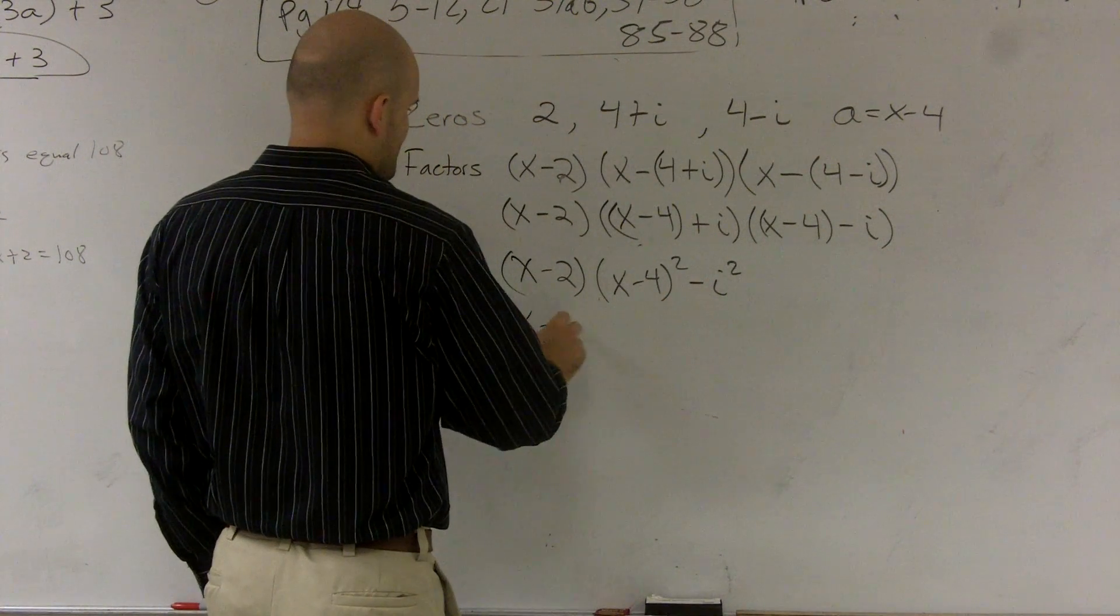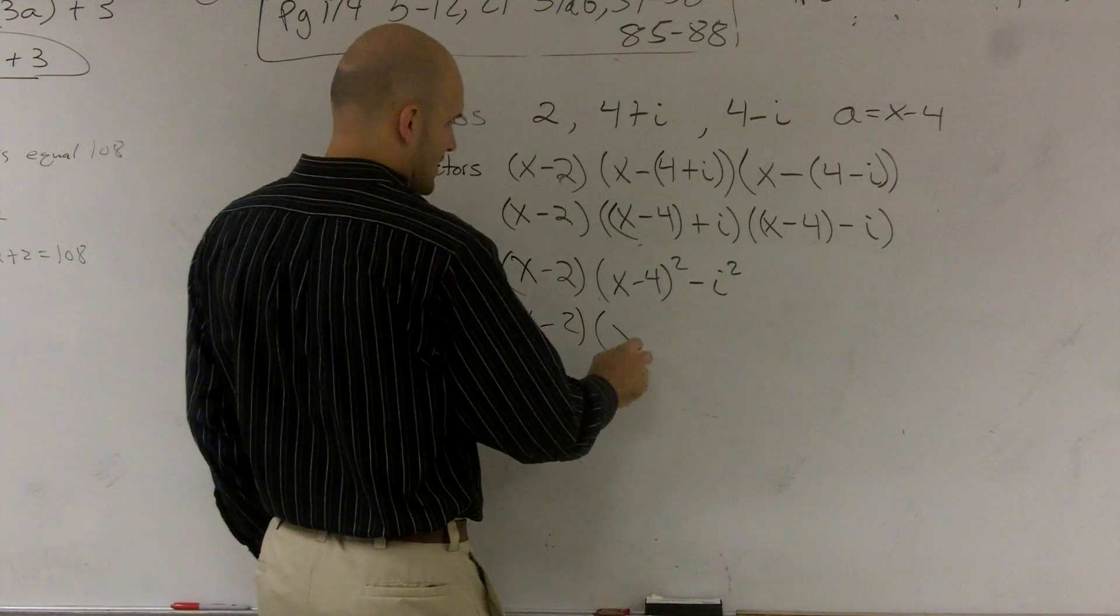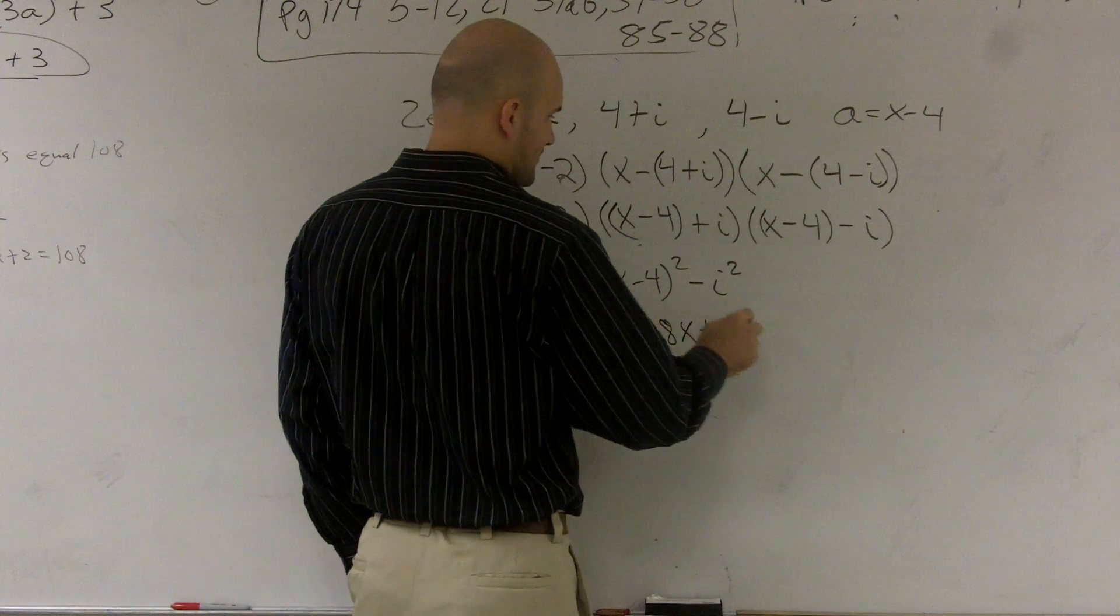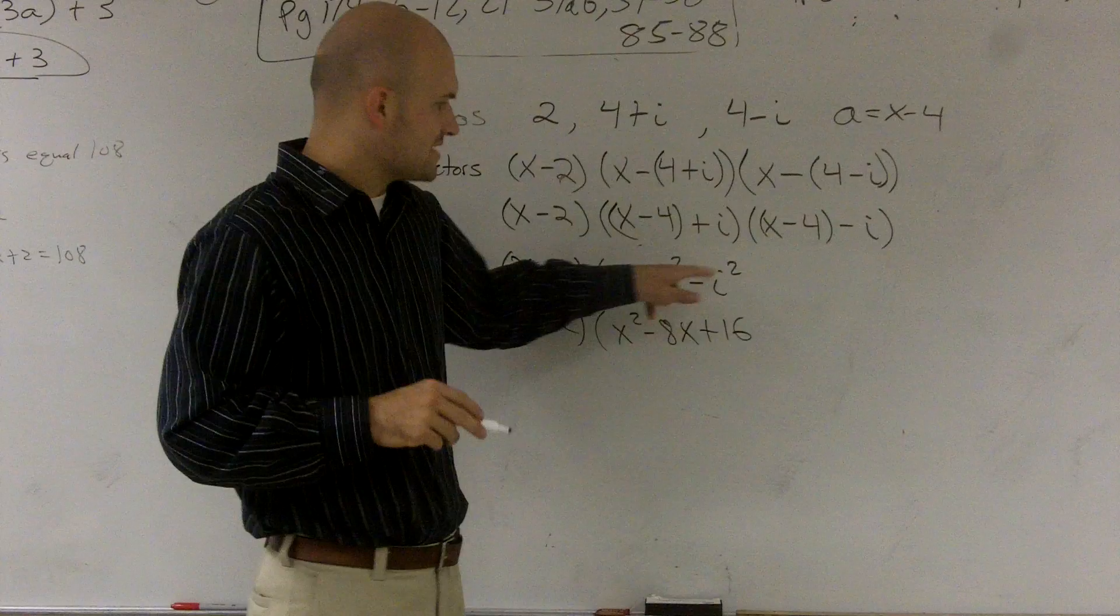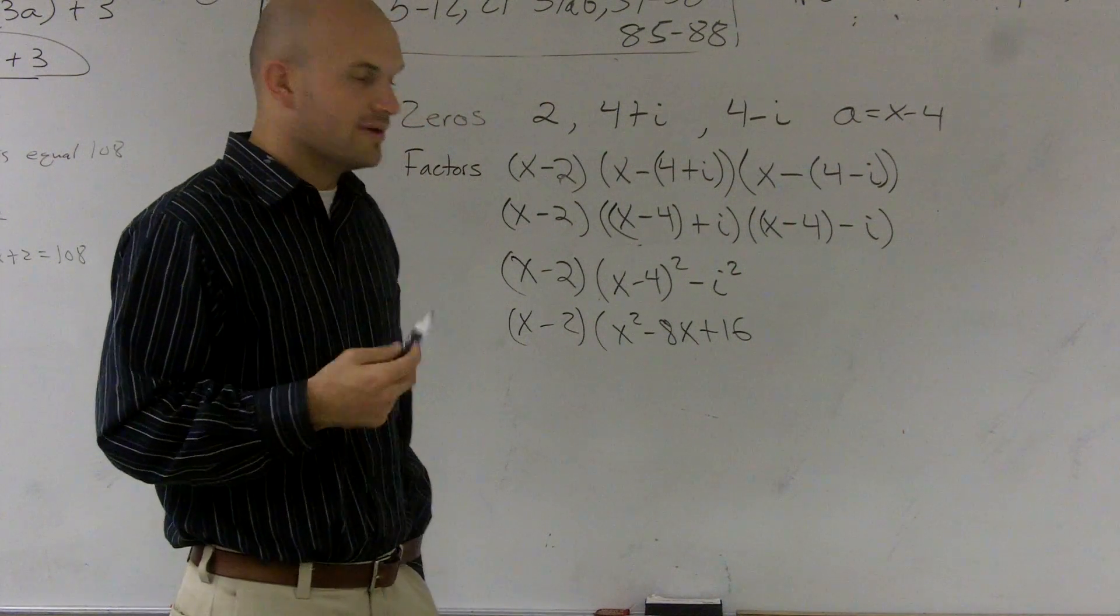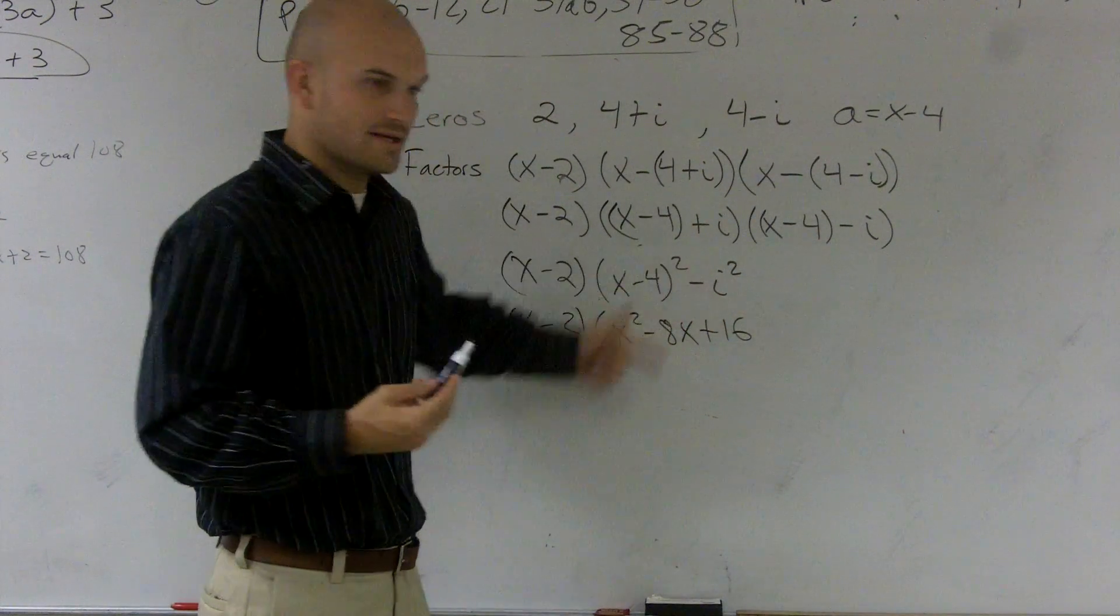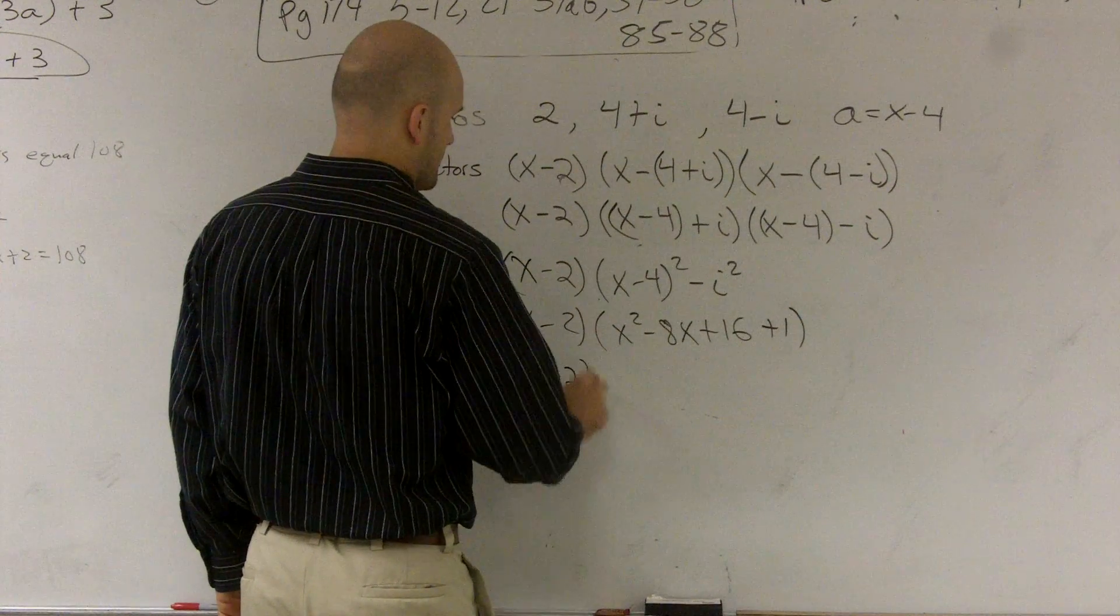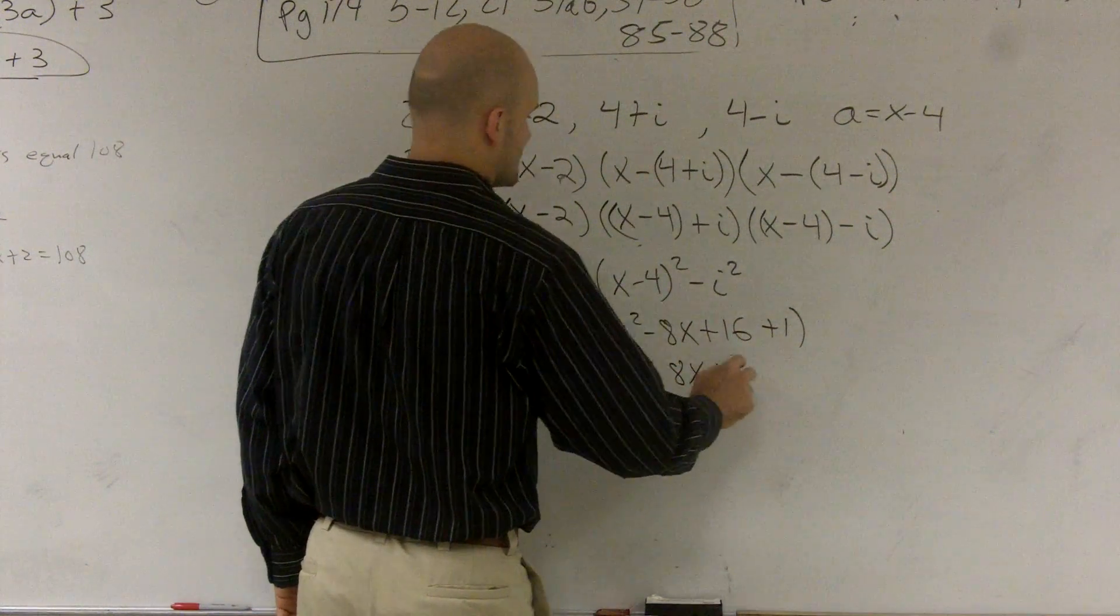So let's go ahead and figure out (x-2). (x-4)² is going to give me x²-8x+16. And then here I have i² = -1, which is going to give me -1, but times i² is -1. -1 times this negative is going to give me +1. So therefore, I have (x-2) times (x²-8x+17).